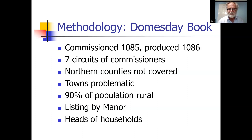Domesday works by manors, not by parishes, so you have to convert from manors to parishes at some point in the process. It also lists — or counts — numbers of heads of households. Over the years, historians have argued about how to multiply from heads of households to total population: is it a factor of three, four, or five? I don't need to worry about this for my analysis, as you'll see later on.